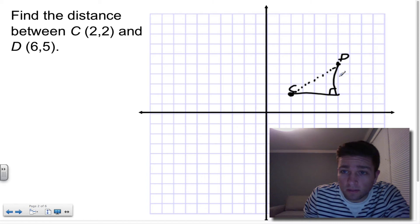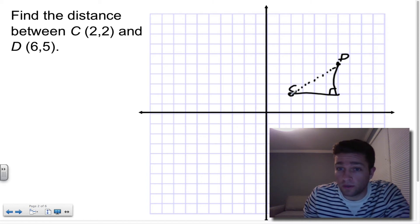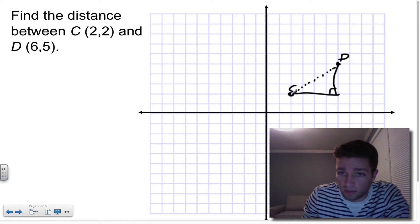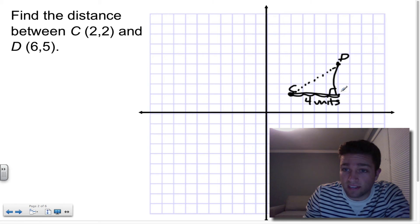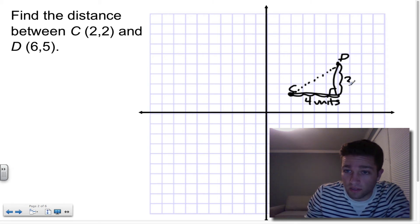This is the hypotenuse. It's across from the right angle, and I do know that this side is four units long, and this side is three units long.